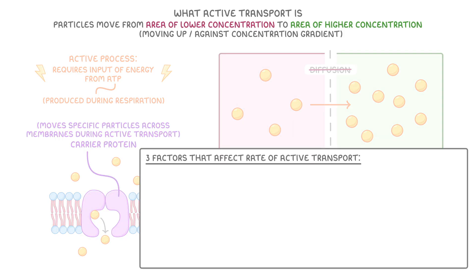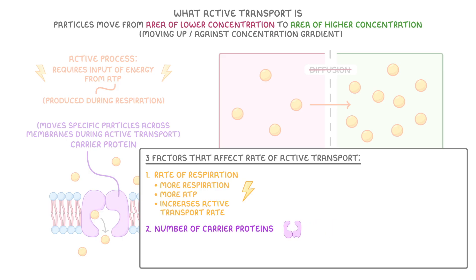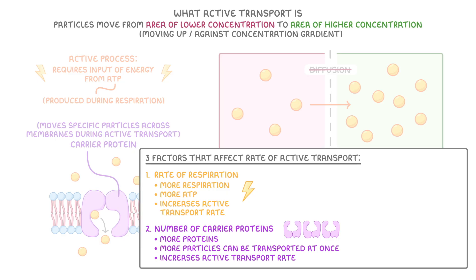There are three main factors that affect the rate of active transport. First, the rate of respiration is important, because more respiration means more ATP is available, and this increases the active transport rate. Second, the number of carrier proteins is crucial, because more proteins means more particles can be transported at once, and this also increases the active transport rate.